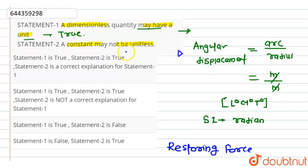So, here statement number 2 is also true, but statement 2 does not correctly explain statement 1. It means our option number 2 is correct. That is, statement 1 is true, statement 2 is also true, but statement 2 is not a correct explanation of statement 1. Thank you.